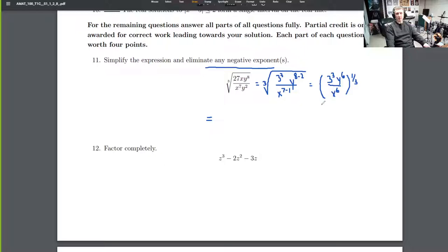Well, this is a product and a quotient of three different things. We've got a product of 3 cubed and y to the 6th, and we've got a quotient of that over x to the 6th.